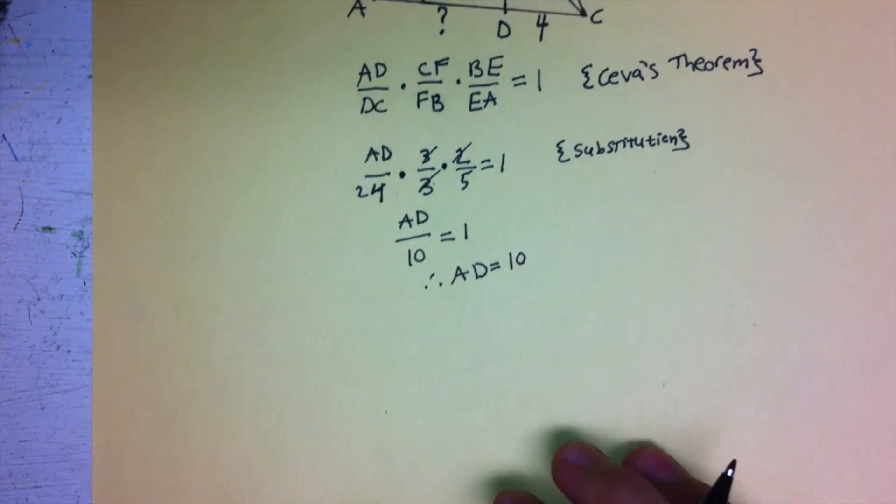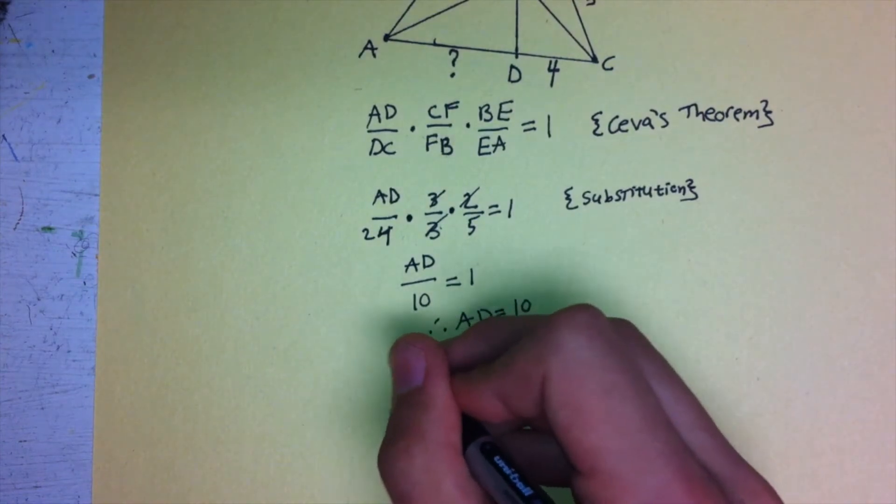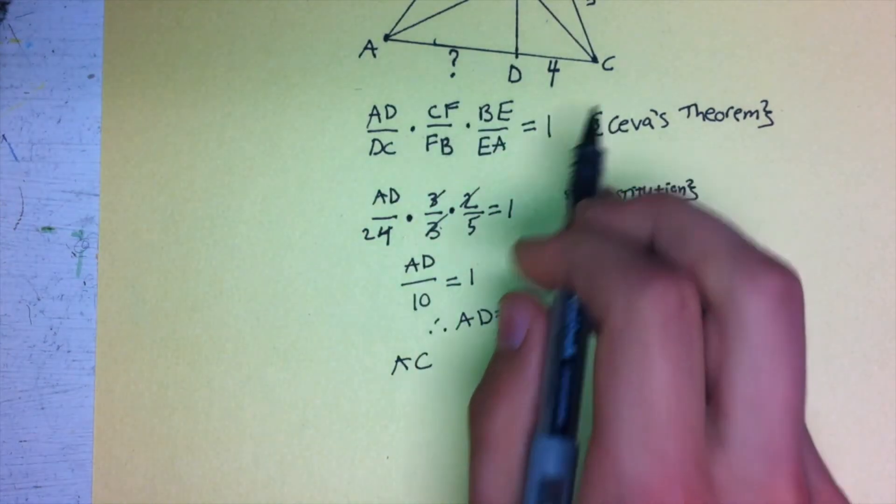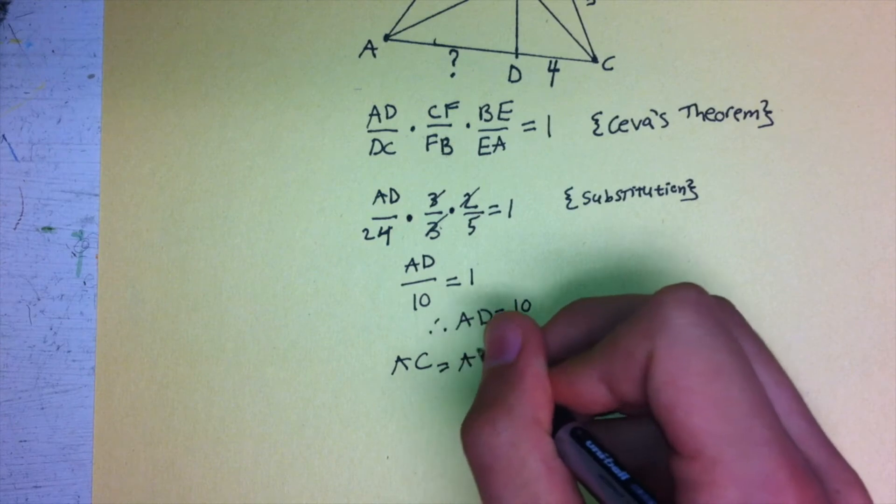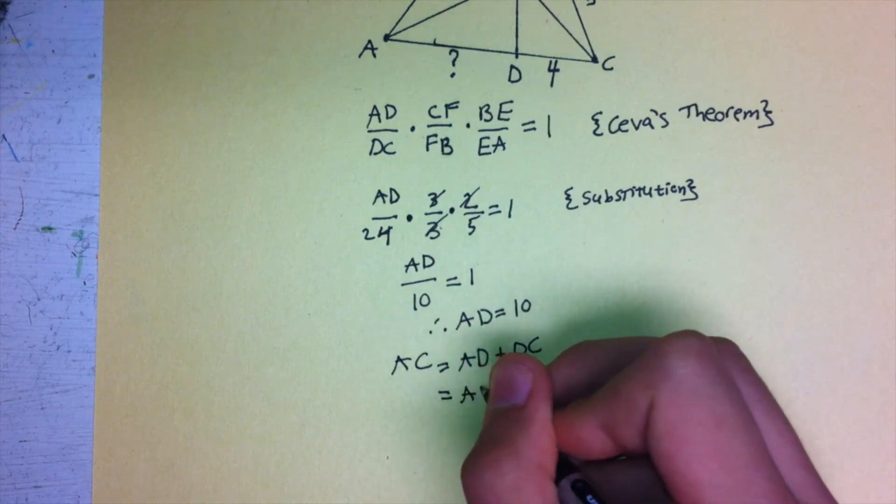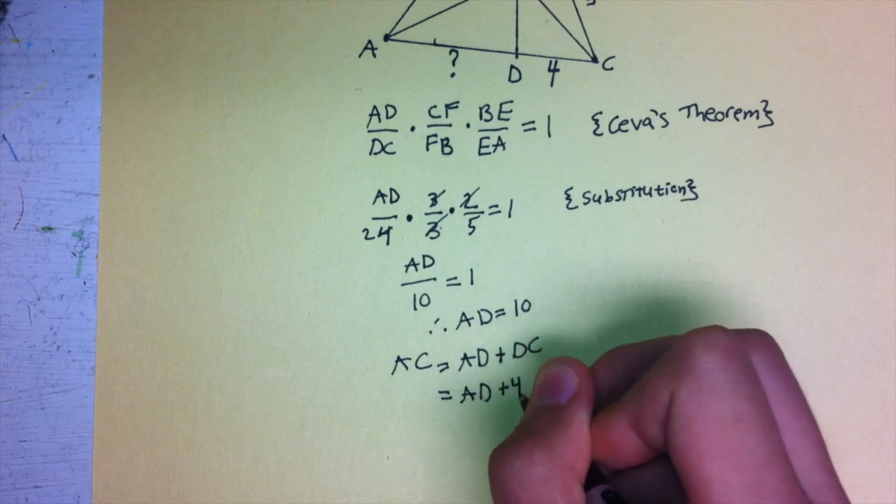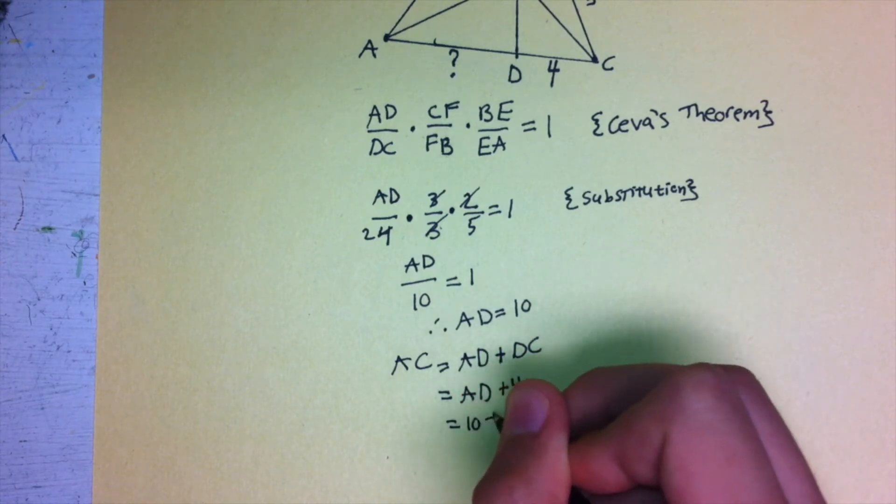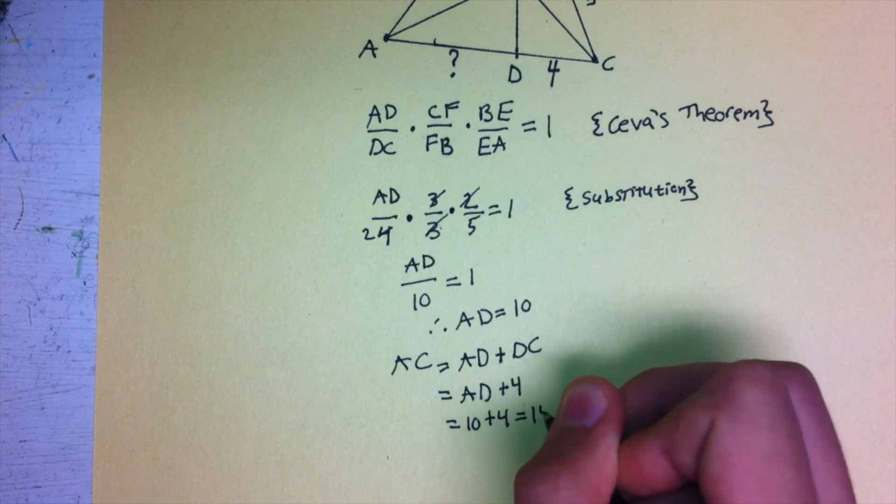Now we know that AC, if you look up here, AC is equal to AD plus DC, which is equal to AD plus 4, which equals 10 plus 4, which equals 14.